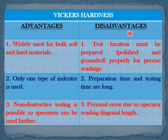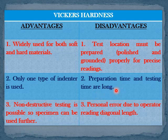Under disadvantages: the test location must be well prepared — it should be polished and ground for precise readings. Both the preparation time and testing time are long, making it a time-consuming method. Personal error due to the operator reading the diagonal length may also arise.